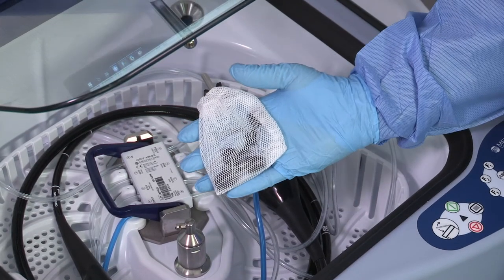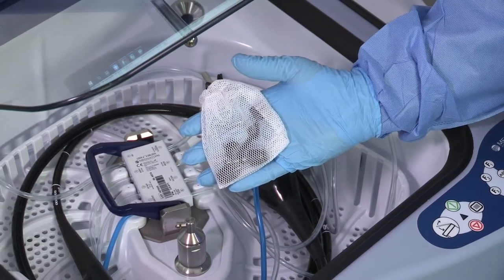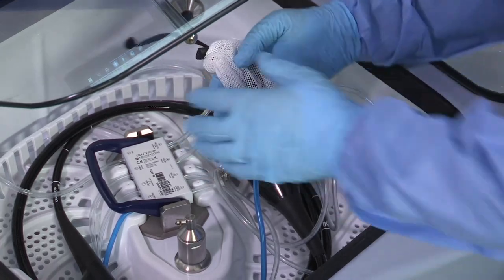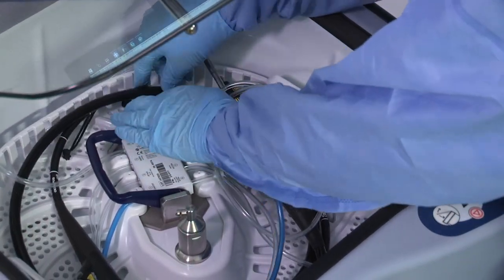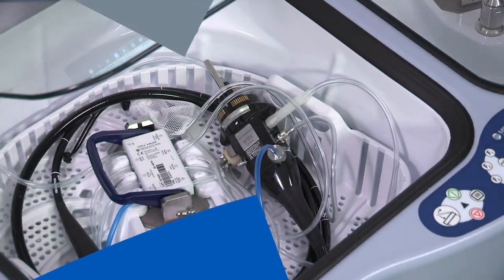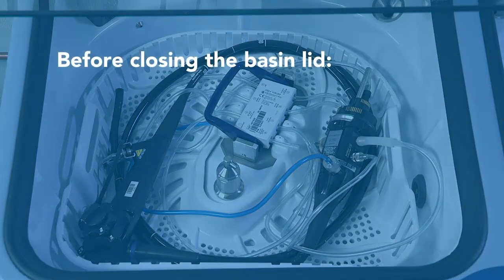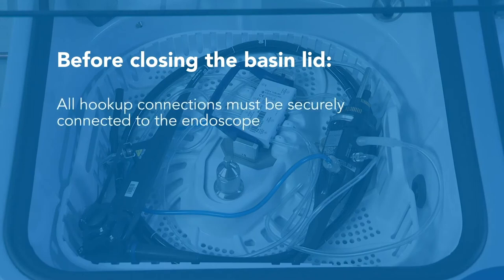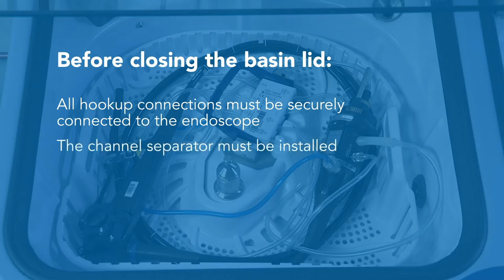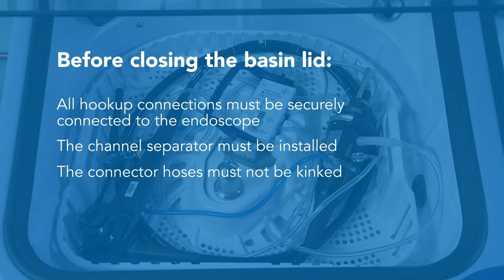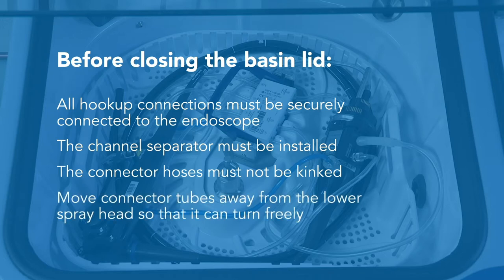Place loose parts such as reusable valves in the accessory bag and place the bag in the basin away from the basin drain. Do not reprocess water bottles, tubing, or forceps in the Advantage Plus reprocessor. Before closing the basin lid, inspect the hookup to ensure all connections are made properly and the tubing does not interfere with the lower spray head next to the basin manifold. All hookup connections must be securely connected, the channel separator must be installed, and connector hoses must not be kinked. Move connector tubes away from the lower spray head so it can turn freely.